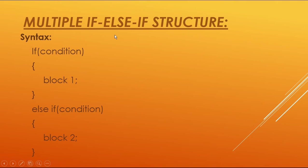Here is the syntax of the multiple if-else-if structure. It is similar to if and else-if structures as we discussed in our previous video tutorials. 'if' is a keyword, and here is a condition written in brackets. The curly braces indicate where the if statement starts and ends — that is the body, which executes when the condition becomes true.